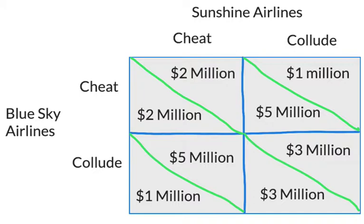Especially firms that might consider colluding. Let's say we have two airlines operating in a particular market: Sunshine Airlines at the top and Blue Sky Airlines on the left. This matrix is known in economics as a payoff matrix. If both firms start off by colluding — keeping their prices high — each firm makes $3 million, and we end up in this bottom right-hand quadrant.